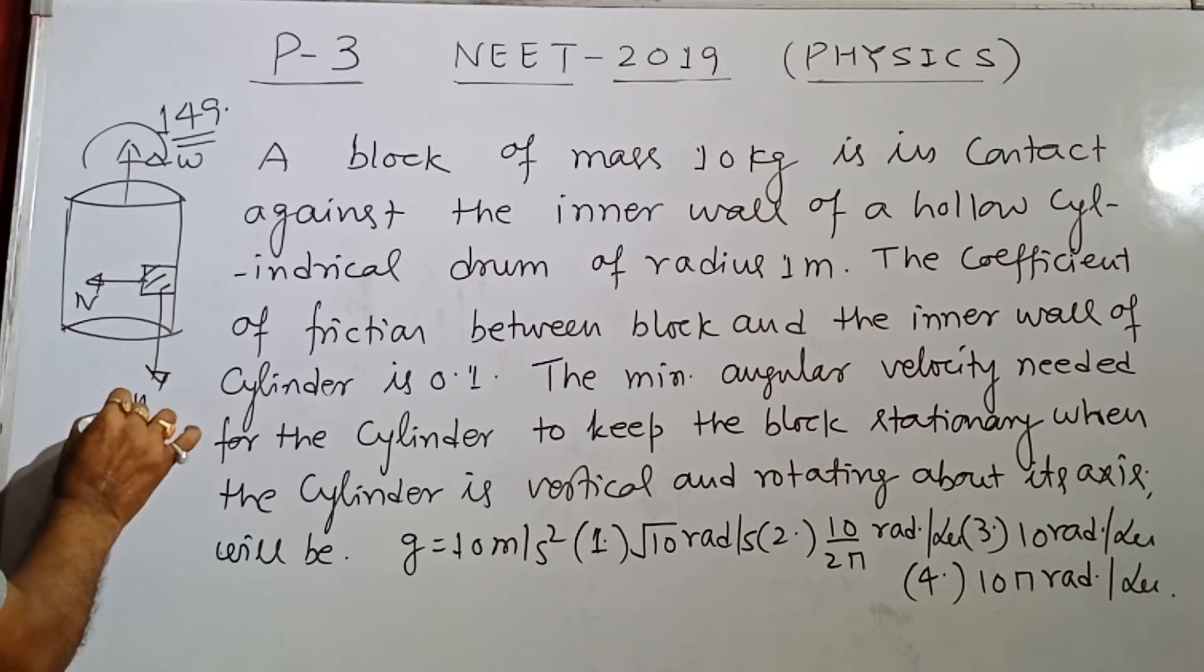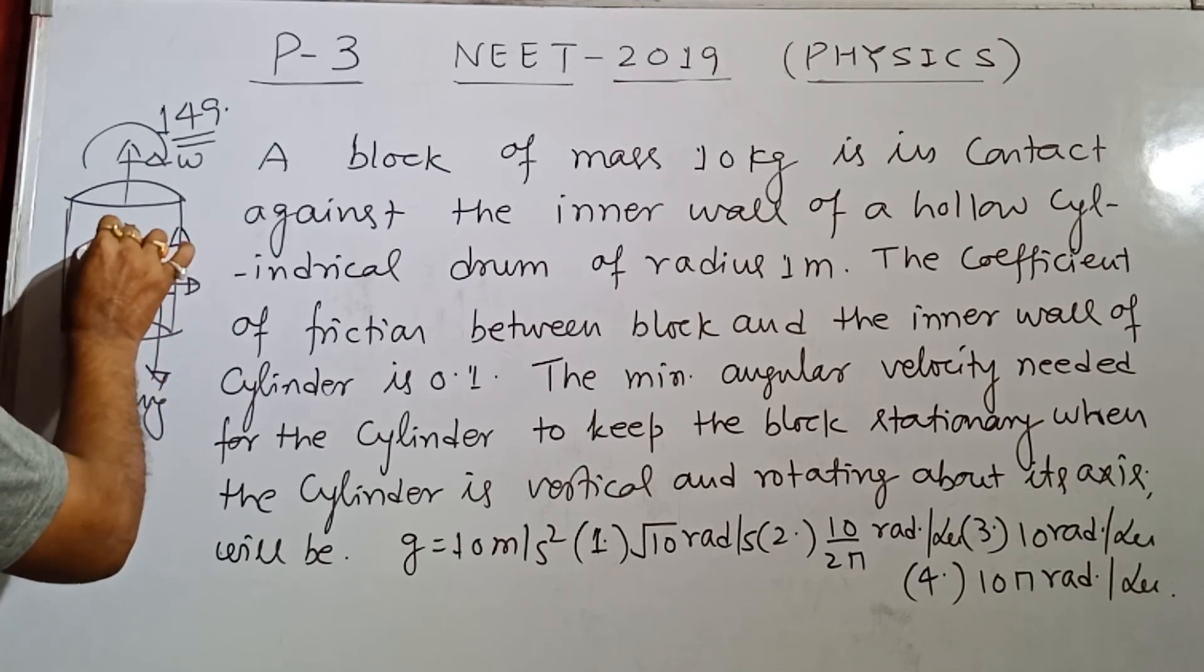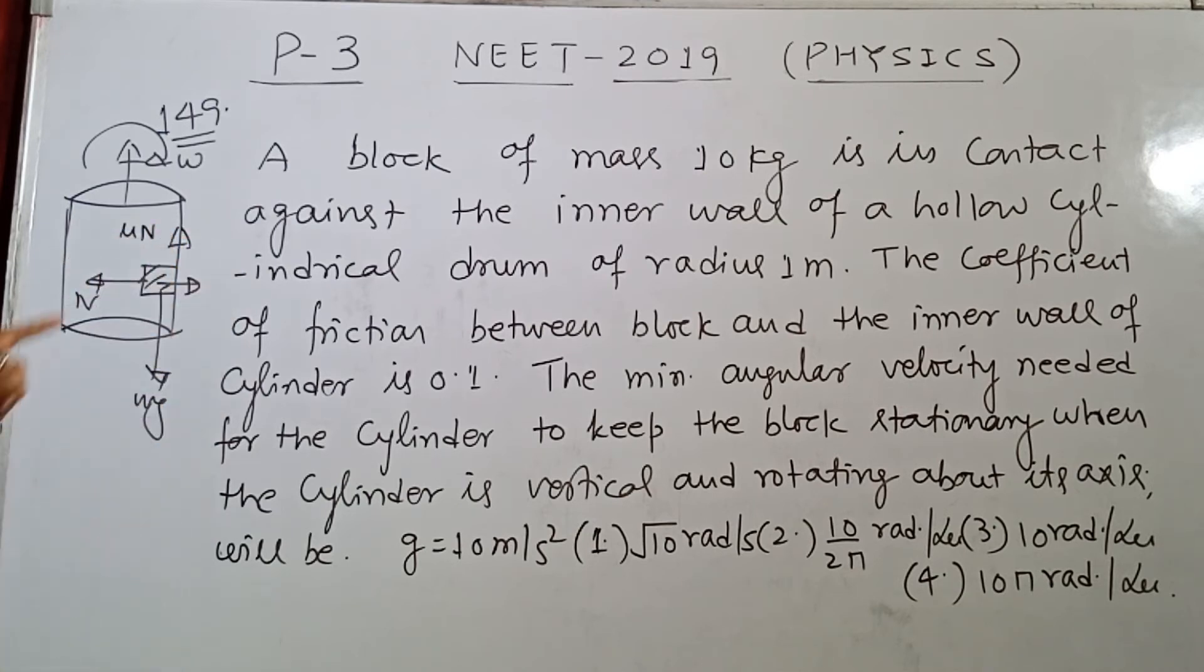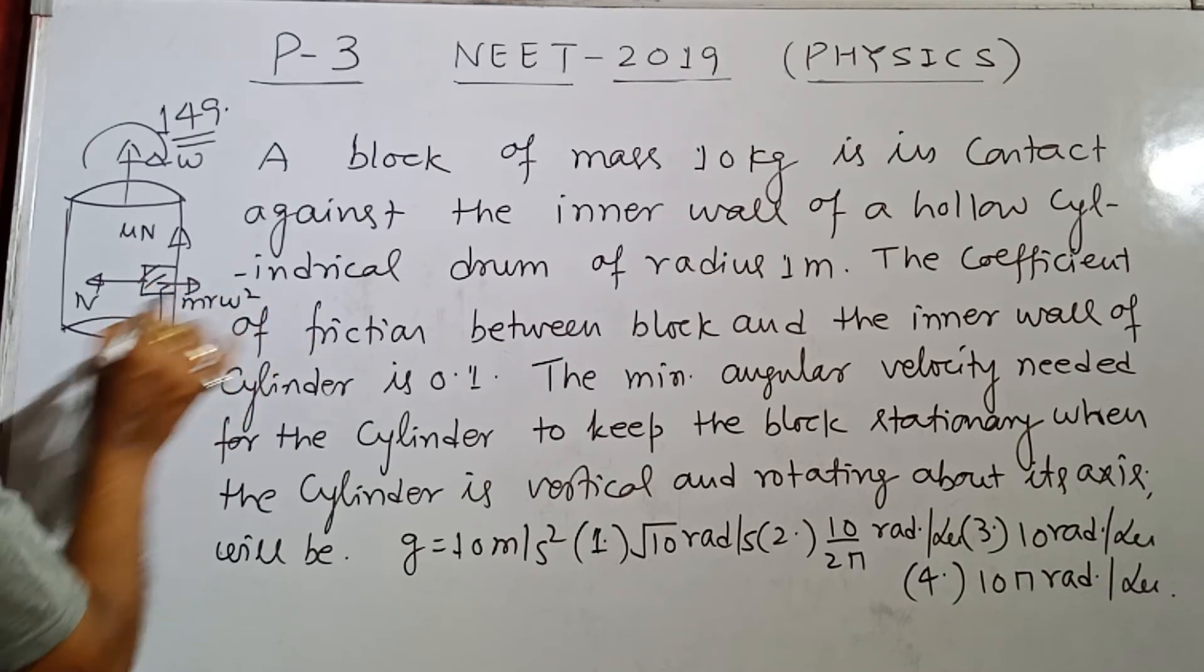This is N (normal force), this is Mg (weight), here is the slipping tendency, so this is the frictional force, and this is M r omega square (centripetal force). So balance.